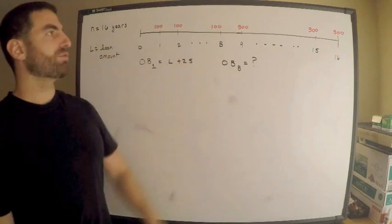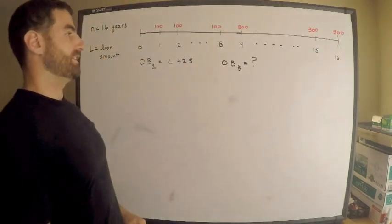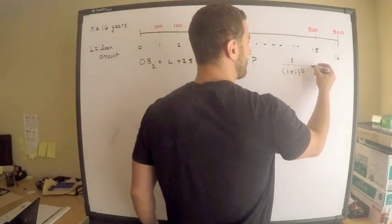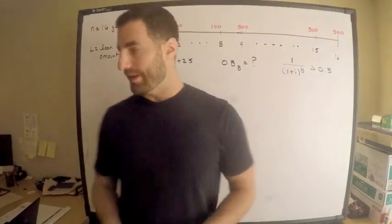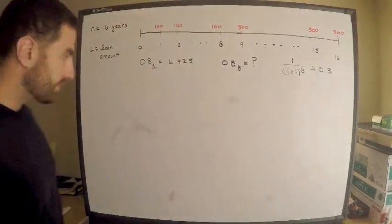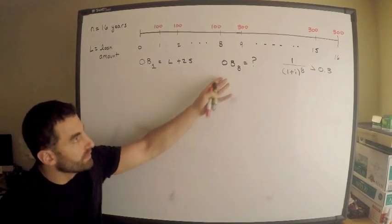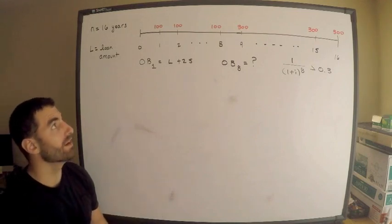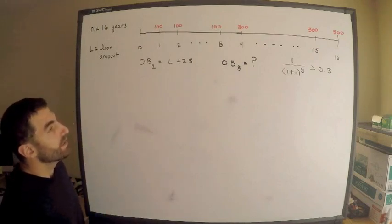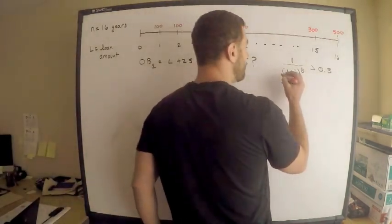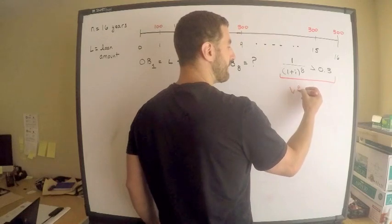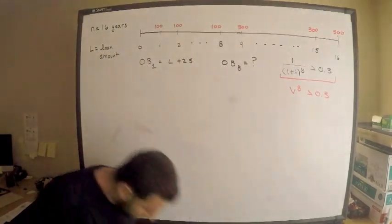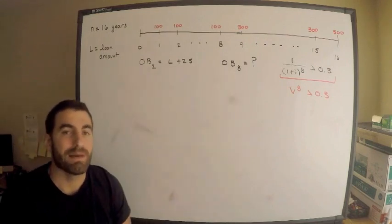We're given that the outstanding balance at year one equals the loan amount plus 25. We're also given that v to the eighth — that is, one over (1+i) to the eighth — is greater than 0.3. We want to find the outstanding balance at the end of year eight, just after the last payment of $100.